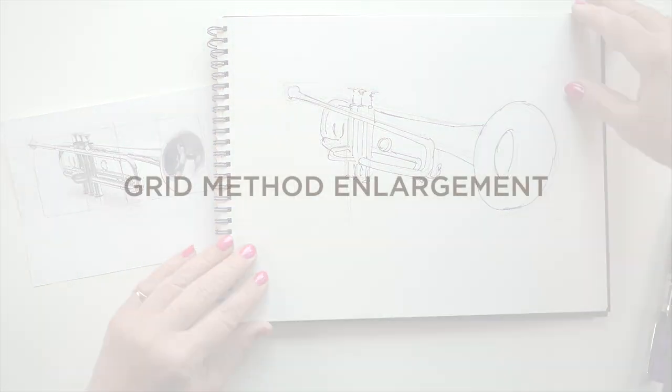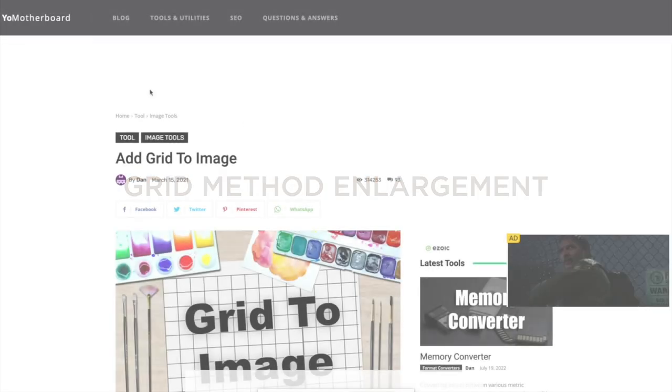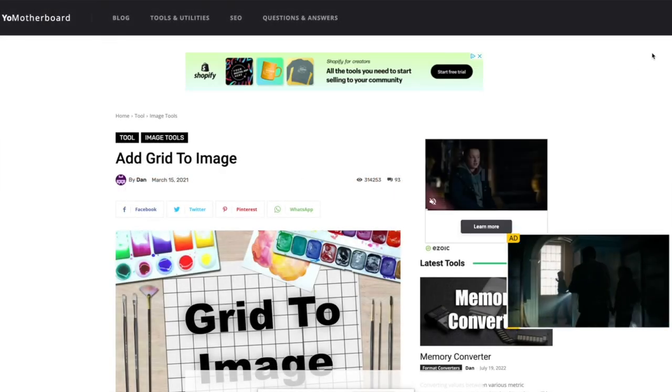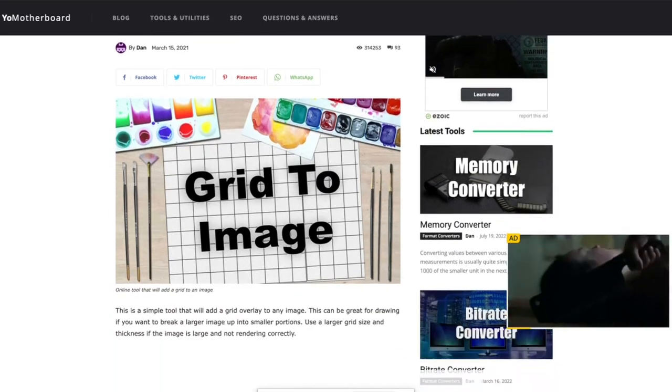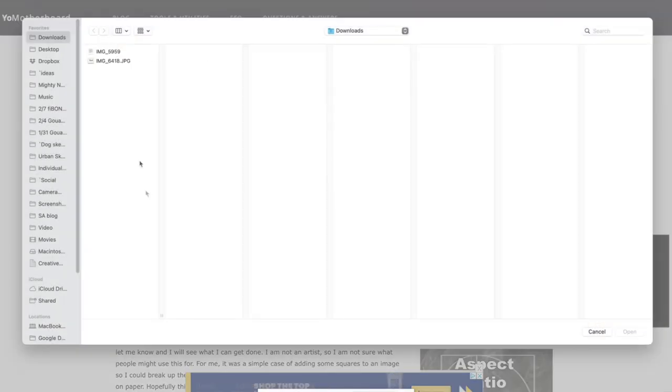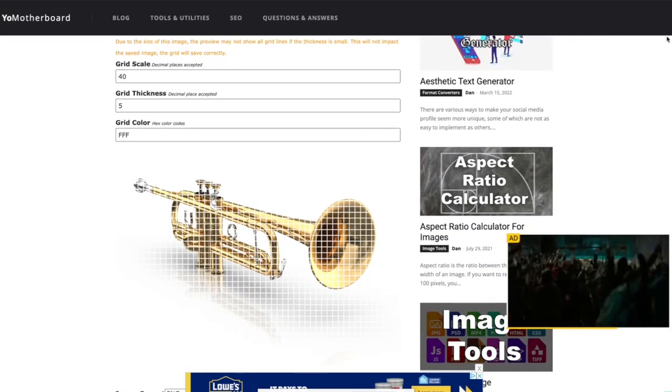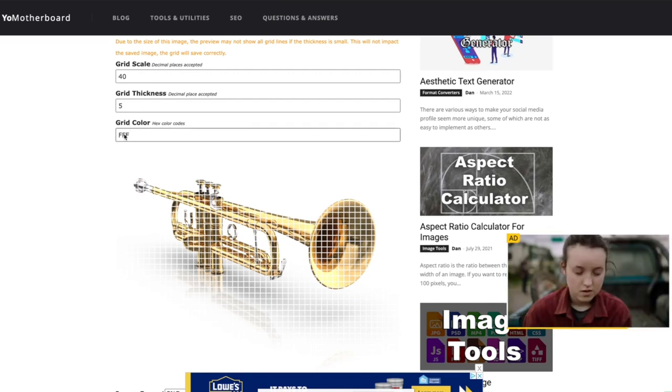So practice drawing things freehand. But when you need to have something be really accurate, and it's a real complex object, like I don't know what a trumpet looks like. I don't know how big all those parts are. So I need some help. So I'm using a website I wish they had when I was in college because we used to have to draw our own grids. And on this website, all you do is upload your image. It's free on this website. It'll put a grid over the top of your image.